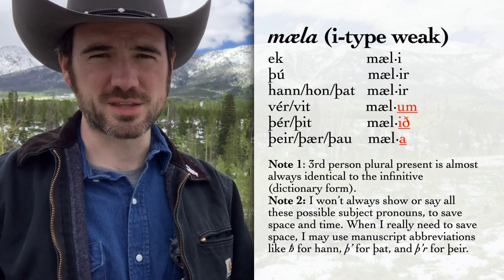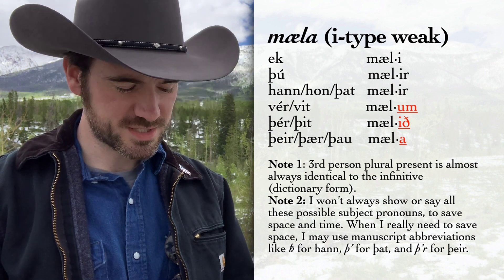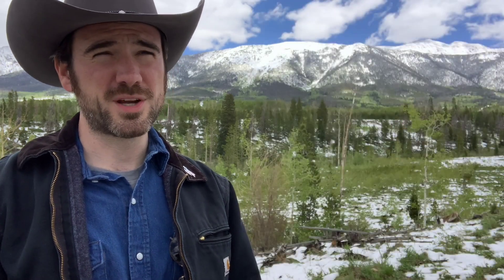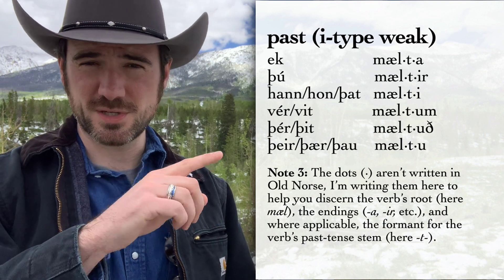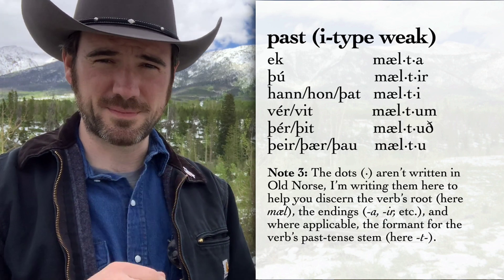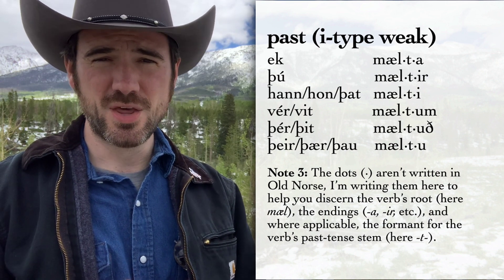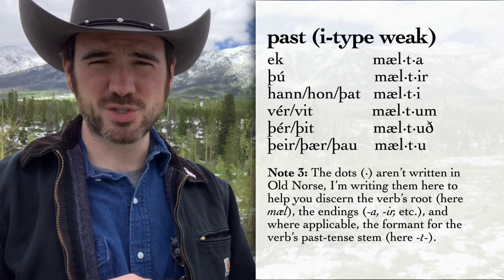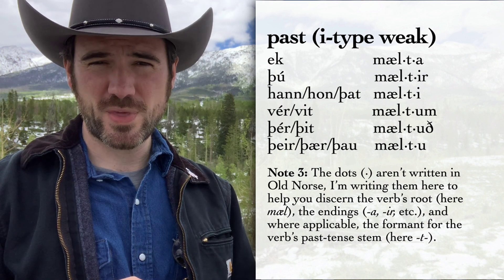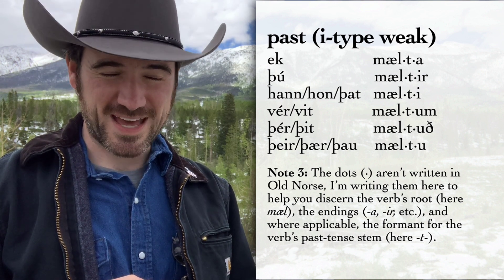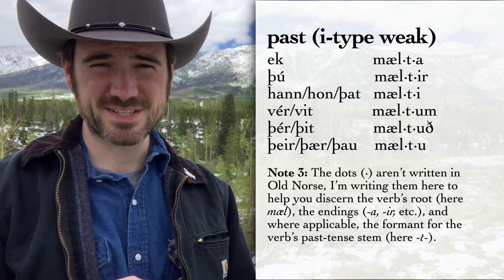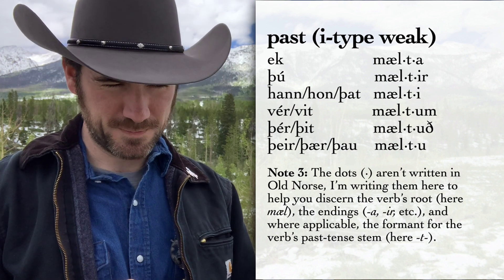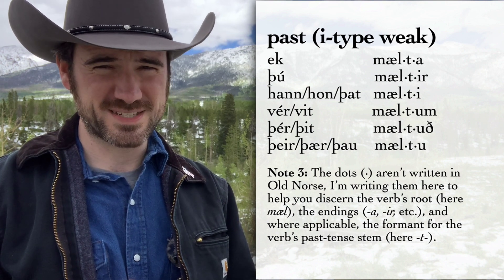So that's the present — I speak, you speak, etc. What about past tense? I spoke, you spoke. There we have: ek mælta. Notice we've got that T taken from the dictionary — we add that to the root, then add our past tense endings. Ek mælta, þú mæltir, hann/hon/þat mælti, vér mæltum, þér mæltuð, þeir/þær/þau mæltu. So your true endings added to the past tense stem are: -a, -ir, -i, -um, -uð, -u.